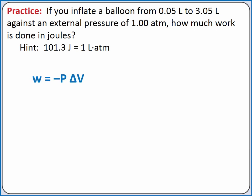We'll start with our equation: pressure volume work for a constant external pressure equals negative pressure times change in volume. Our change in volume is the final volume minus the initial volume.